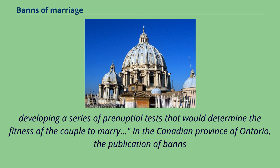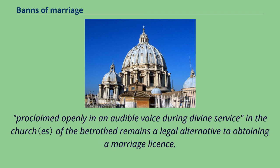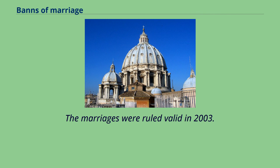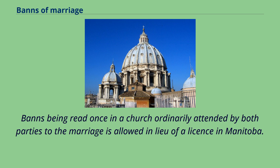In the Canadian province of Ontario, the publication of banns, proclaimed openly in an audible voice during divine service in the church of the betrothed, remains a legal alternative to obtaining a marriage license. Two same-sex couples married this way at the Metropolitan Community Church of Toronto on January 14, 2001, since the province was not then issuing marriage licenses to same-sex couples. The marriages were ruled valid in 2003. Banns being read once in a church ordinarily attended by both parties to the marriage is allowed in lieu of a license in Manitoba.